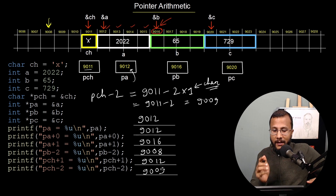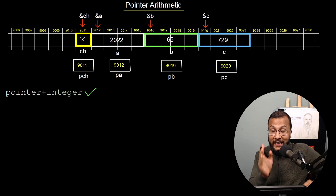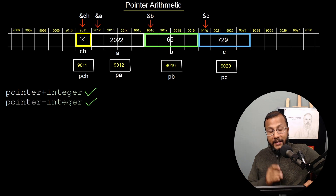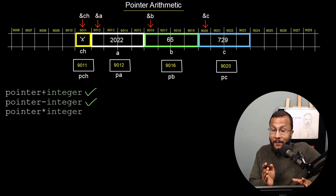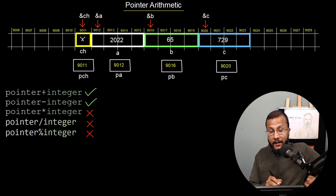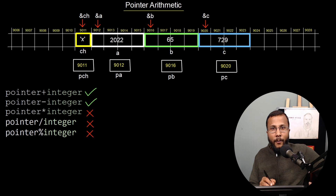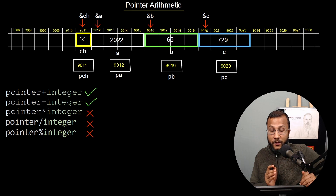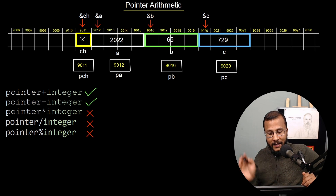So what we have seen so far is: pointer plus integer is a valid operation, and pointer minus integer is also a valid expression. However, you cannot perform multiplication of a pointer with an integer, you cannot divide an integer from a pointer, and you cannot do pointer modulo integer. These are invalid operations because they do not make any sense, so they are restricted.